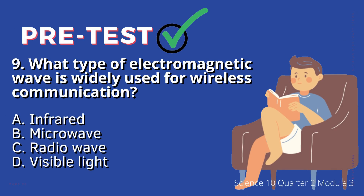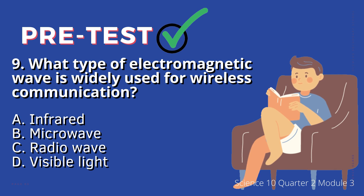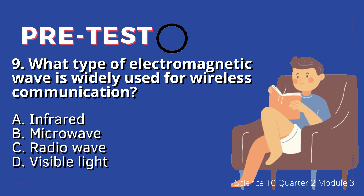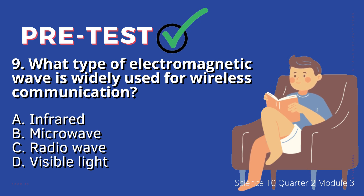9. What type of electromagnetic wave is widely used for wireless communication? A. Infrared, B. Microwave, C. Radio wave, D. Visible light.